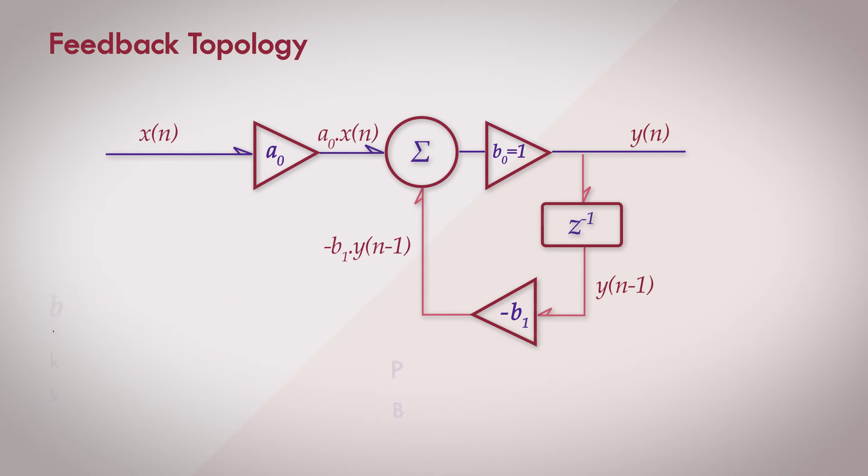Moving on, the placeholder W is basically the input signal X subtracted by the feedback delayed path B1 times Y. And this is the difference equation of the first order feedback filter. An intriguing thing to note is that the output Y appears on either side of the equation.